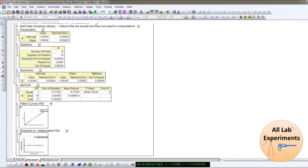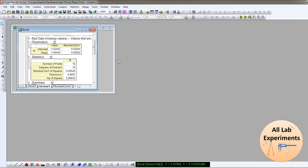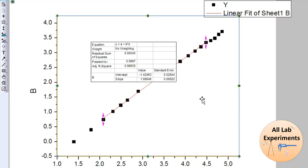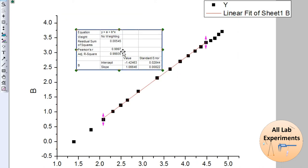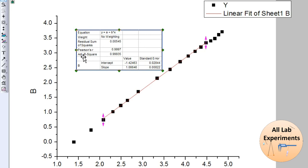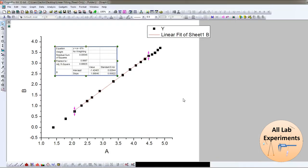And if we look at the graph, on the graph also there is one box containing all the information, like the value of R square and the value of slope, intercept, and the standard errors. In this way you...